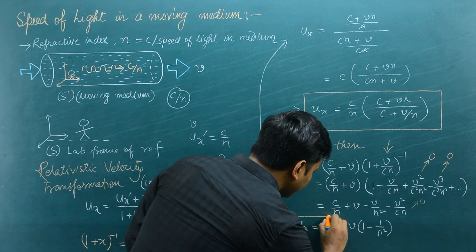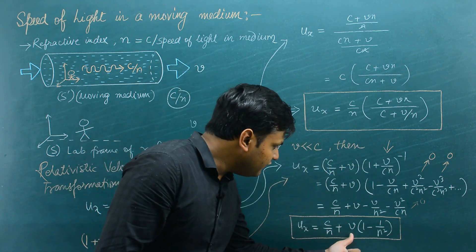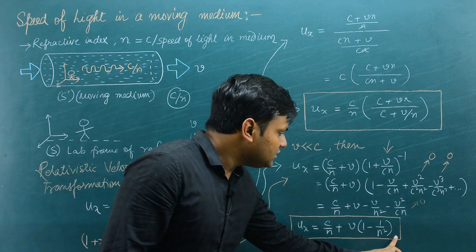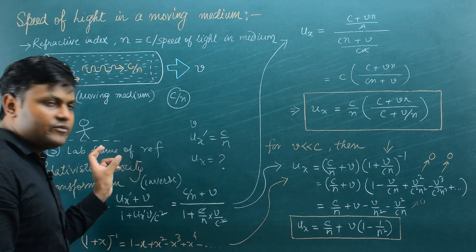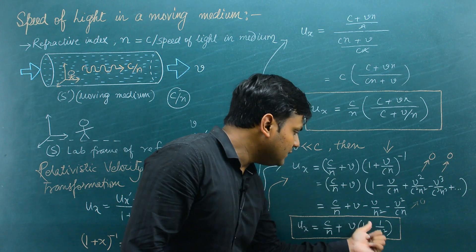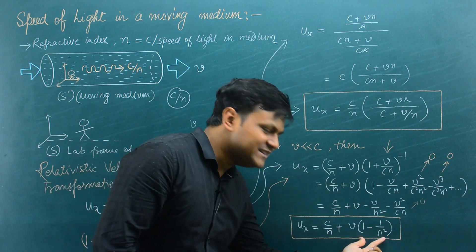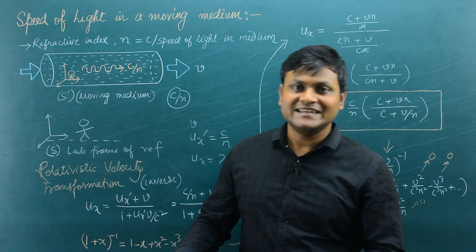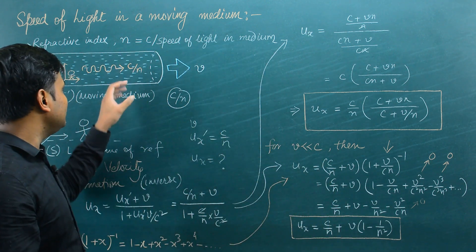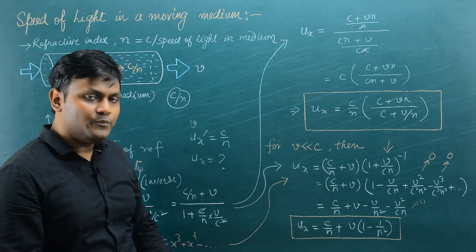So the formula for the speed of a light photon in a moving medium, when the medium is traveling at velocity much less than c, is ux = c/n + v·(1 − 1/n²). Here c/n is the speed of the light photon in the medium itself, and the additional term v·(1 − 1/n²) arises because we are observing the photon from a lab frame of reference. It looks as if the medium is dragging the light photon with an increased velocity given by that factor. Even though the speed of light is constant in vacuum for all observers, in a moving medium the speed of light is different for different observers. That is all for today's video — I hope you learned something. Thank you very much.